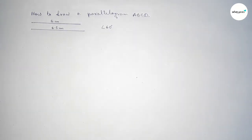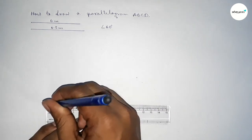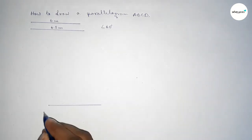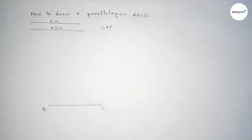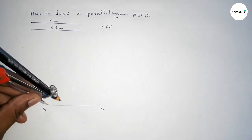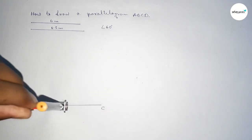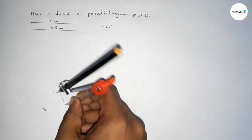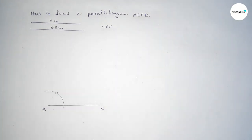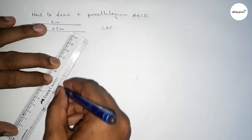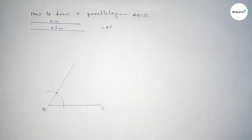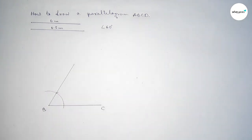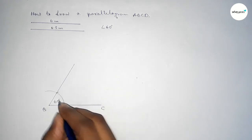First we draw a line of length 6.5 centimeters — this is the BC line. Taking point B here and point C here. Now we draw a 60 degree angle at point B. Putting the compass and taking any length, drawing an arc, then with the same length cutting here so both curves intersect at a point. Joining this line gives us the 60 degree angle — checking confirms this is perfectly a 60 degree angle.